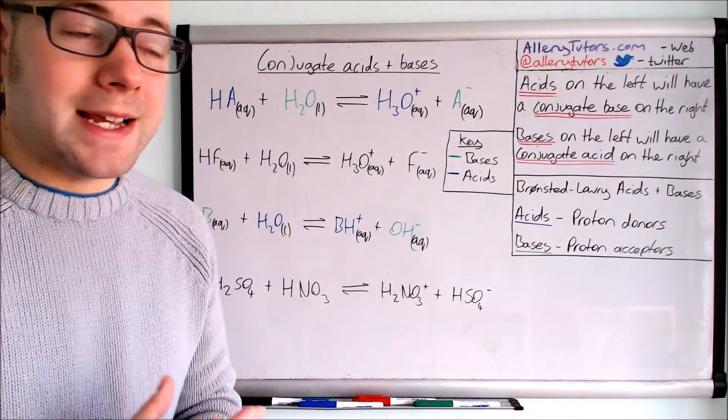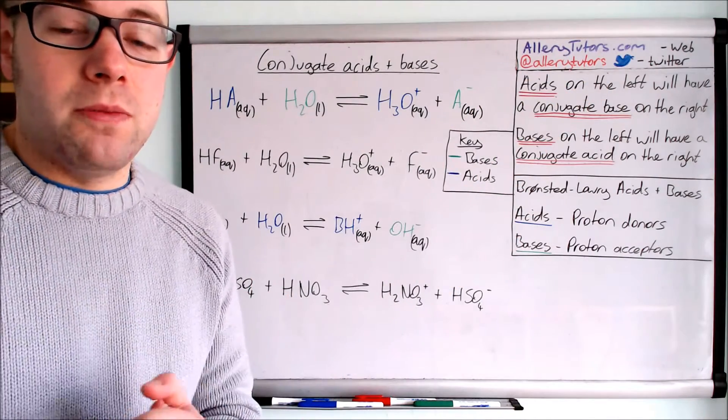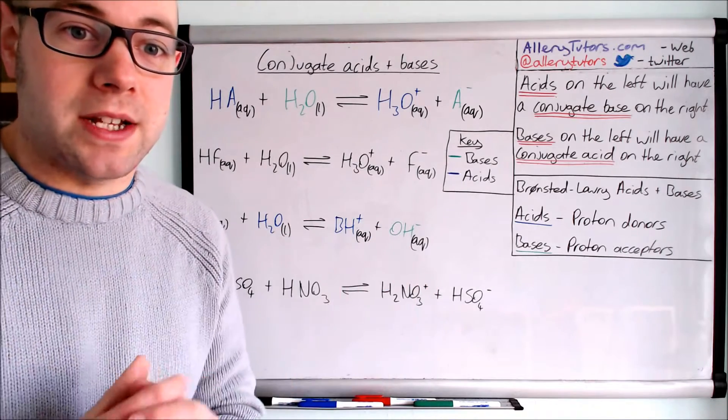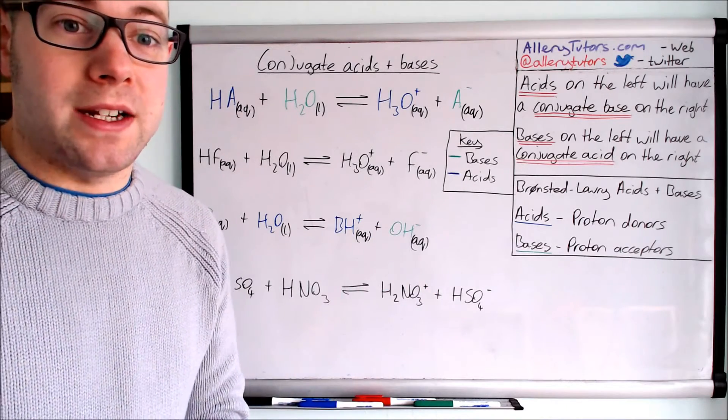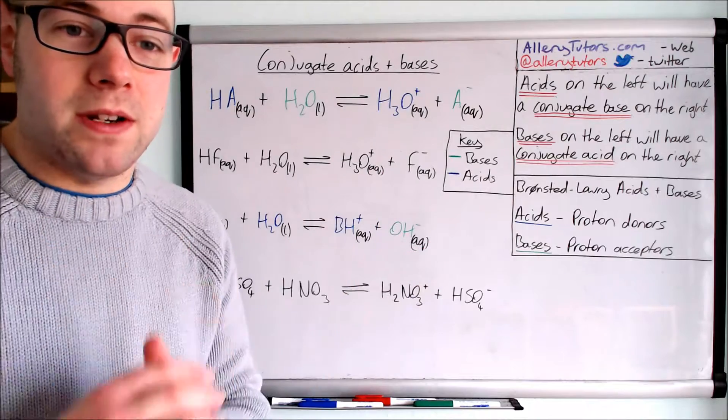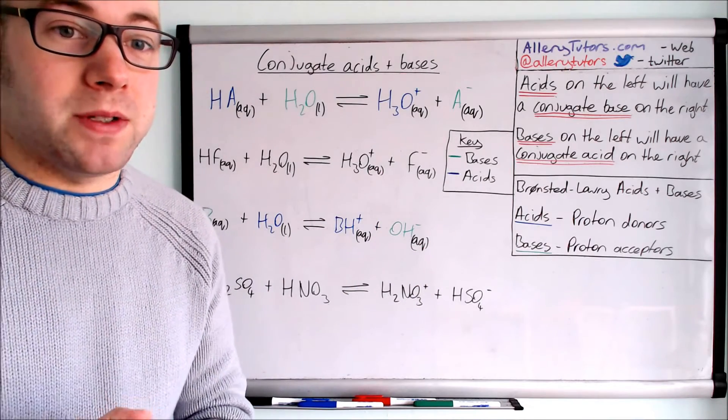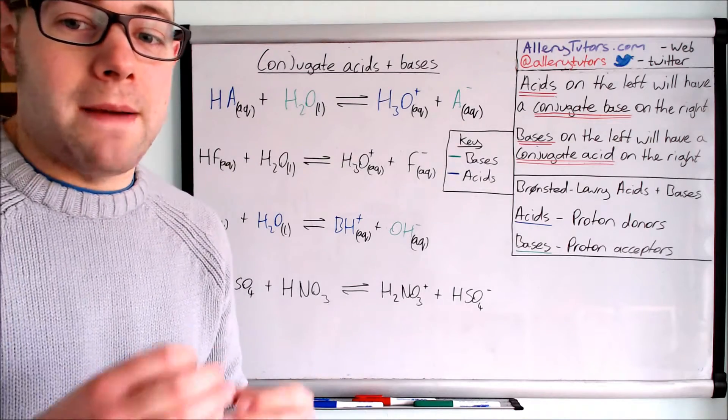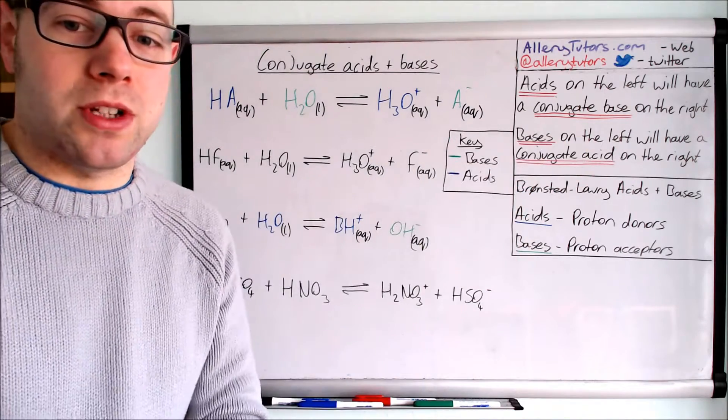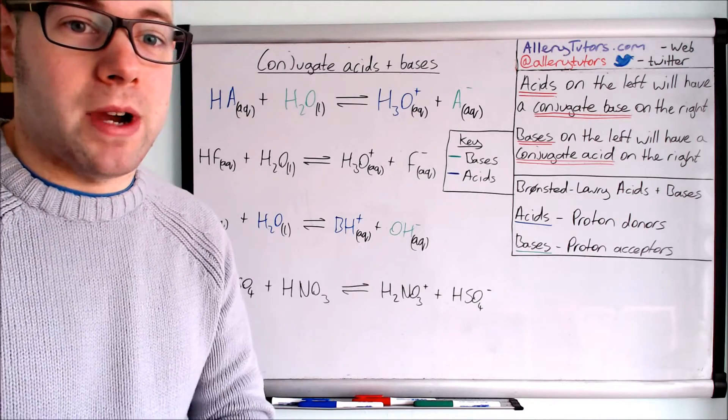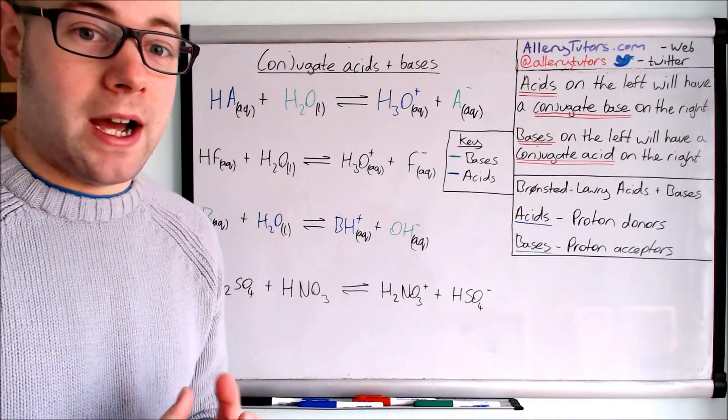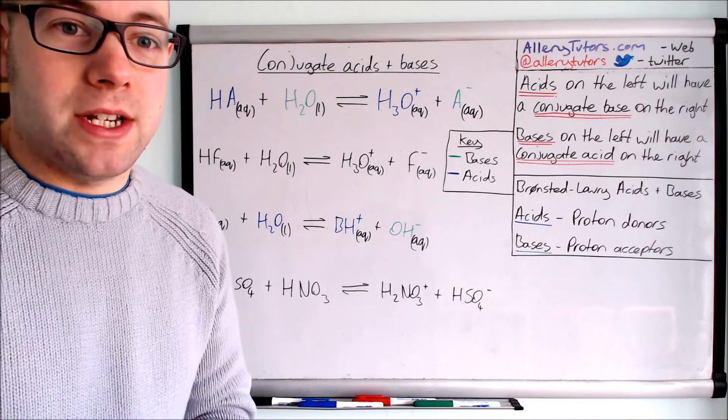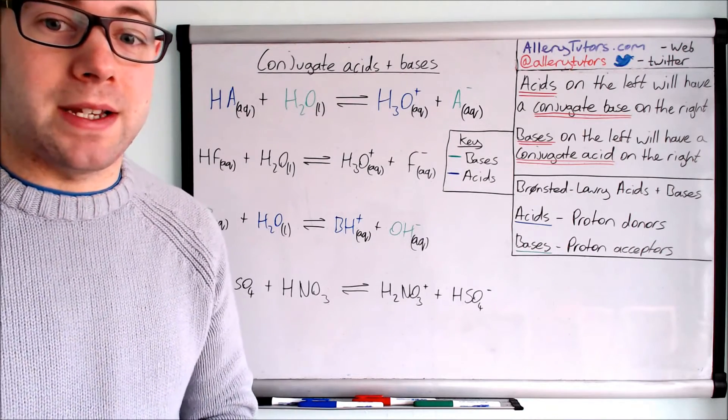So what we're trying to say is that actually acids on the left of a reaction will always have a conjugate base on the right, so it's linked with it, it's associated with it. Bases on the left will also have a conjugate acid on the right, and so we're going to identify them and show you how to work them out. But the most important thing really is you need to know what Bronsted-Lowry acid and base is.